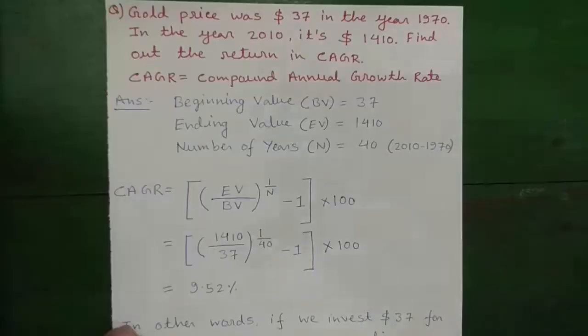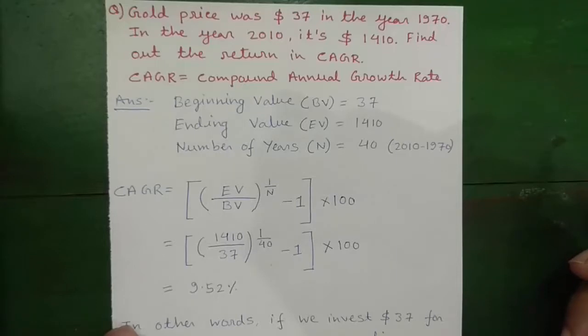So let's start. Gold price was $37 in the year 1970 and in the year 2010 after 40 years it is $1410. Find out the return in CAGR.